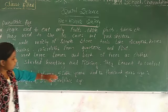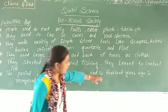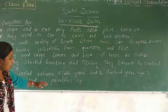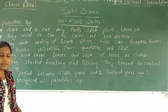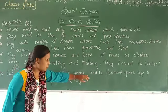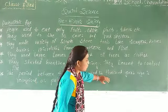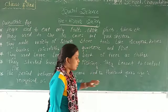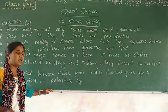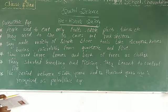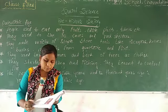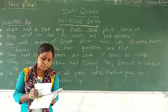The period between 500,000 years to 12,000 years ago is recognised as the Paleolithic age. So these points are all about the Paleolithic age.